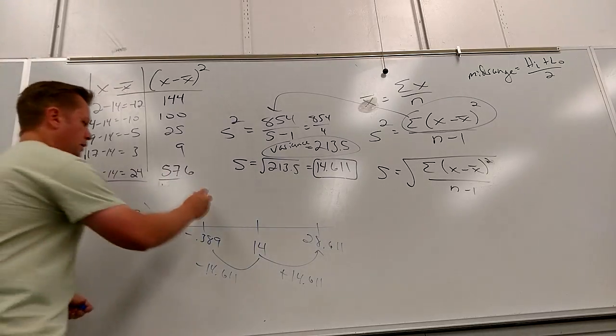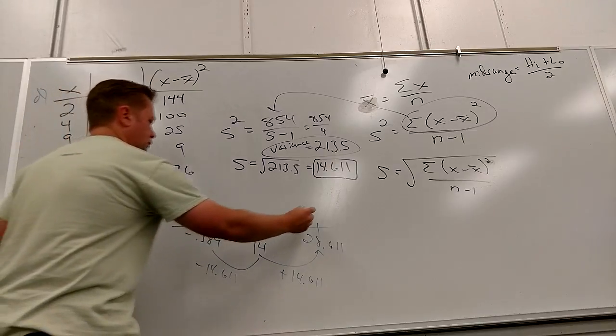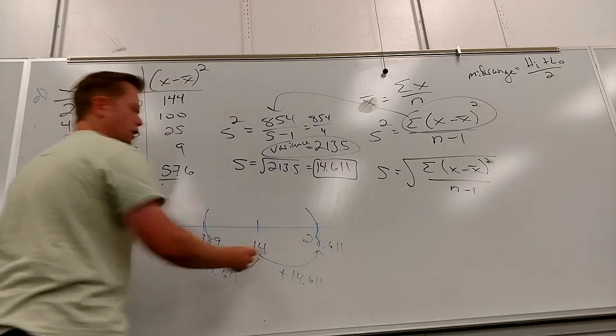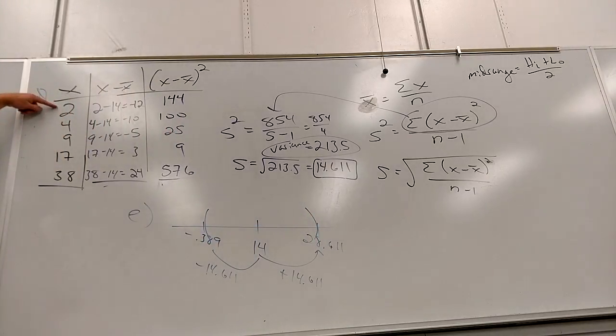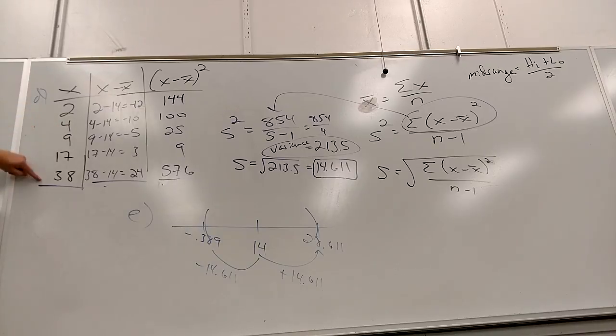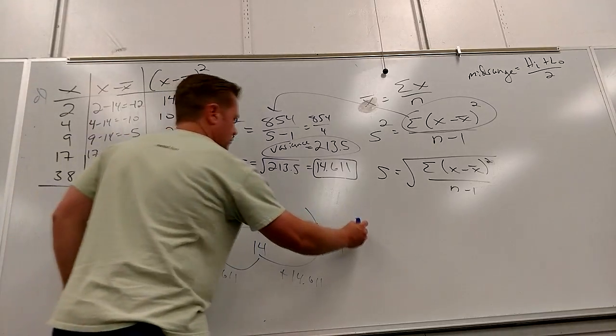How many data points do I catch in there? I catch all the way up to 28.611, and the only number I don't catch is 38 — that's way up here and outside the range.